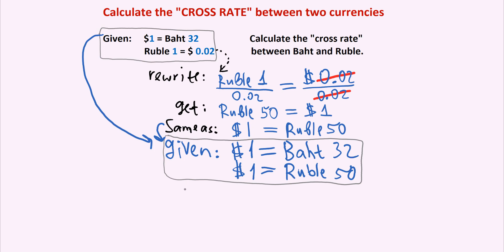So we can write baht 32, right? 32 Thai baht equals 50 Russian rubles, ruble 50. So this is what we can write to simplify what we are given. And then, just like in my other video, we can go two different directions from here.